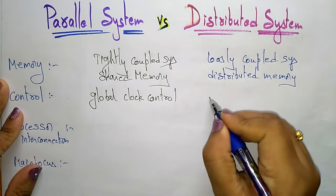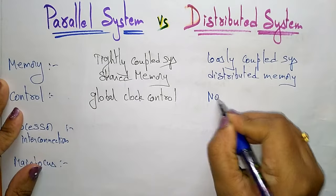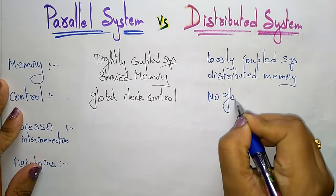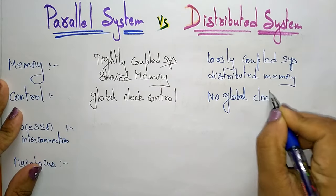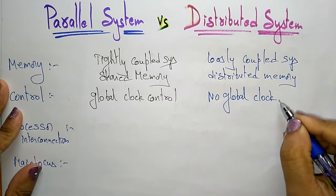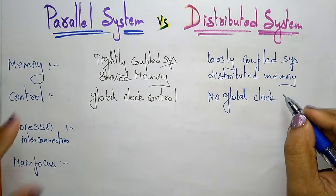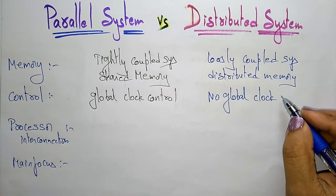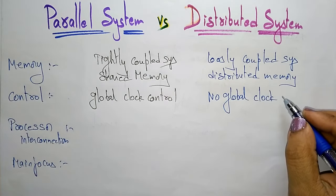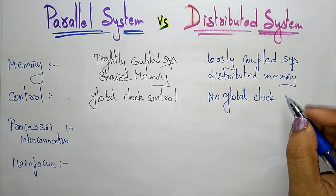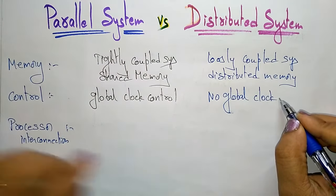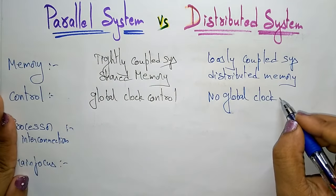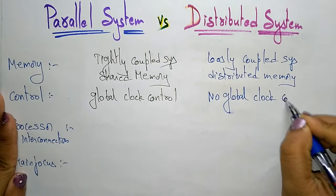Whereas in a distributed system, there is no global clock control, because each system is independent of the other. All the systems are independent, so each system has its own clock control. In a distributed system, there is no global clock control.